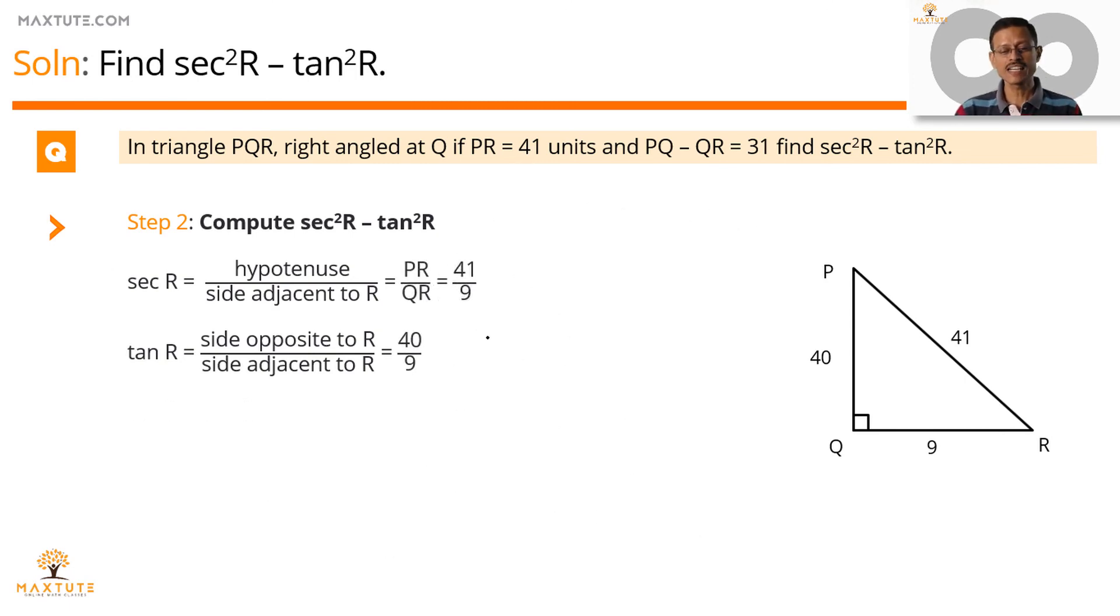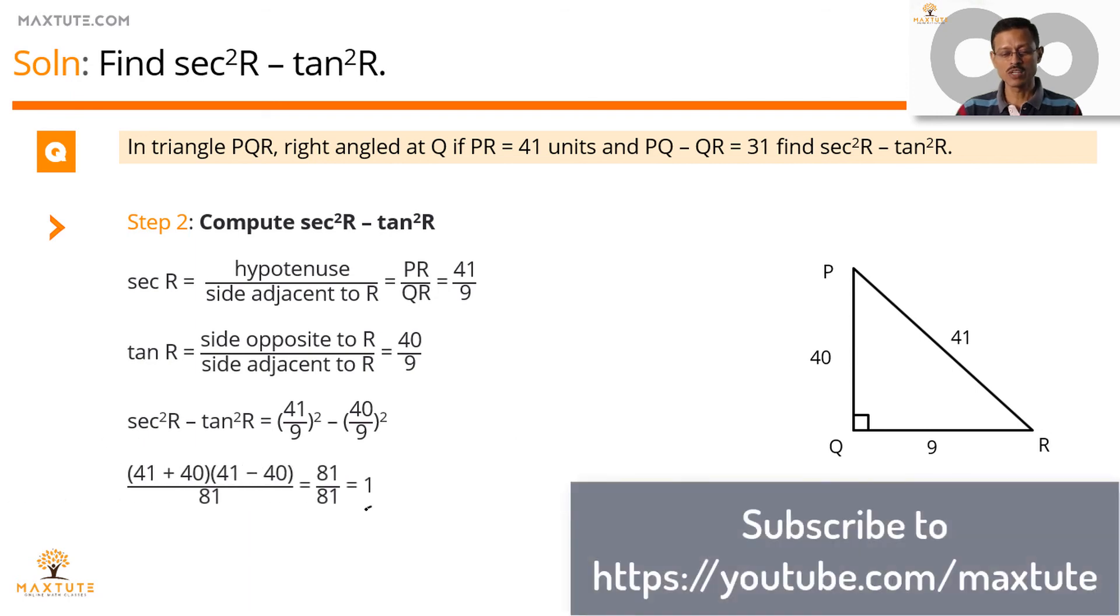Consolidated in a printed form. Secant R is equal to 41 by 9. Tan R equals 40 by 9. So secant square R minus tan square R is 41 by 9 the whole square minus 40 by 9 the whole square, which works out to be 1.